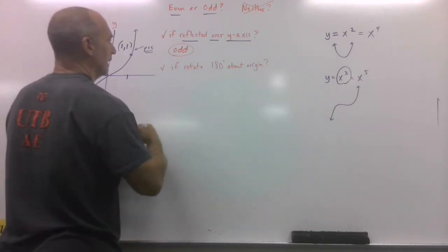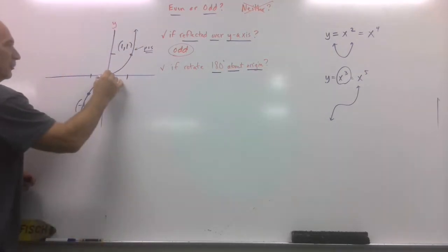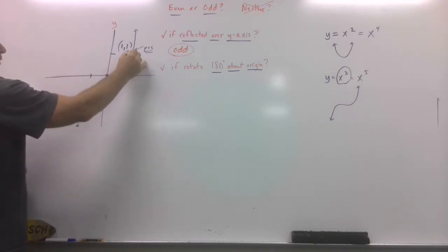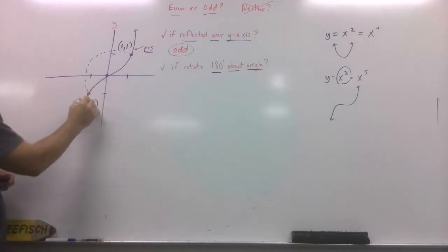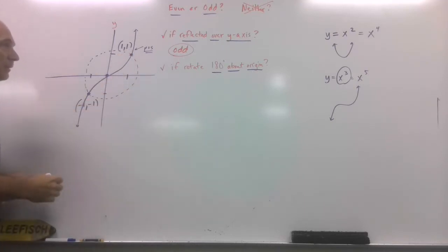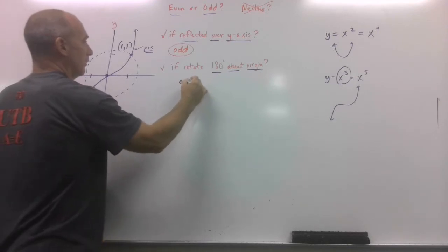But now it says, what if you rotate it 180 degrees about the origin? So, it's like there's a nail right here, and I've got to spin this thing. So, really, if you think about it, 1,1 would go 180 and land right on top of negative 1,1. Negative 1,1 would rotate this way and land right on top of 1,1. So, guess what? No change. So, it's still odd.